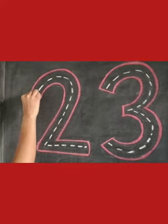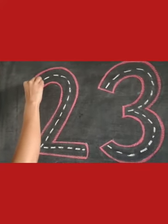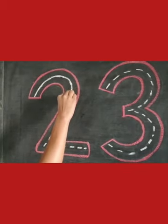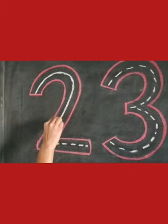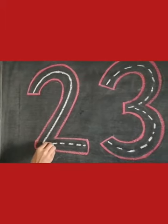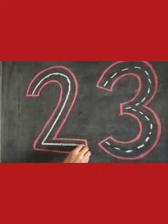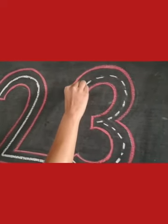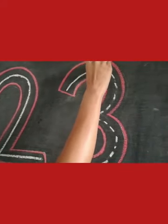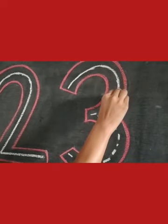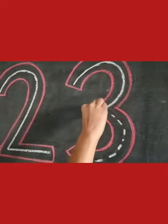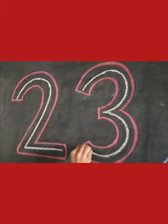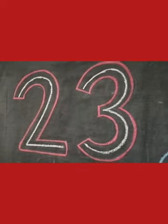Start. First, curve. Then, slanting line. And then, sleeping line. Number 2. And here, opposite C curve and another opposite C curve. Number 3. 23.